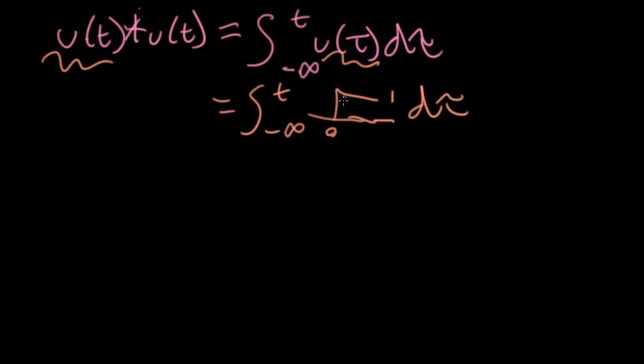All right, so this is the function I'm integrating. Obviously, all the stuff down here is getting chopped off at zero. So I'll change the lower limit here to zero, and we're just integrating one from zero to tau.